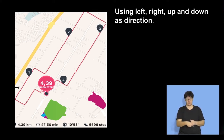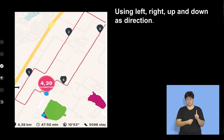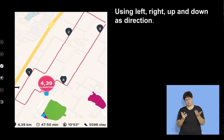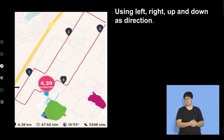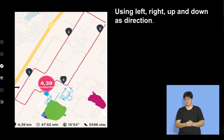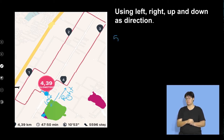Let's use left, right, up, and down as our directions. I'm going to use this as my starting point. Because of the angle on the board, we'll define that direction as left and that direction as right, just to give us a reference point. Looking at the path, she went up about 50 meters from her starting point.